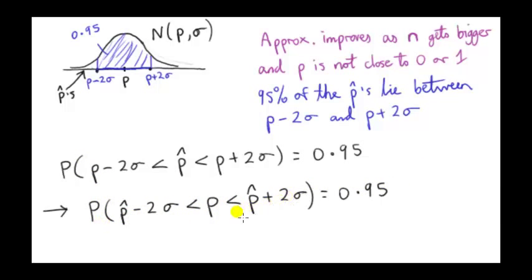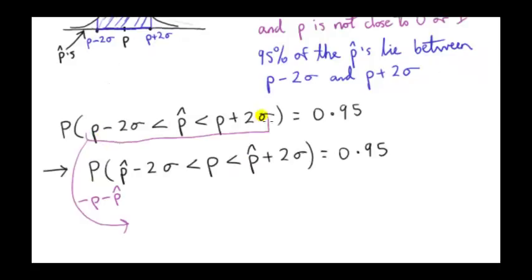What we do is take this inequality and subtract P and P hat from all three terms. So if we subtract P from the first term it'll cancel out this P and subtract P hat. We get minus P hat minus 2σ less than, and we subtract P and P hat from this term. We get rid of the P hat and we're left with minus P in the middle. And subtract P and P hat from the last term to get minus P hat.